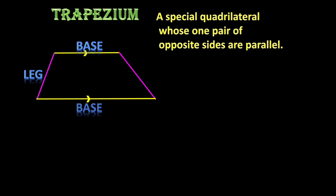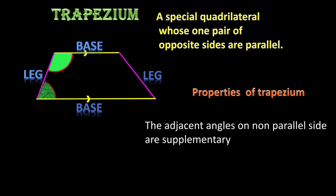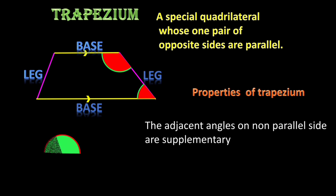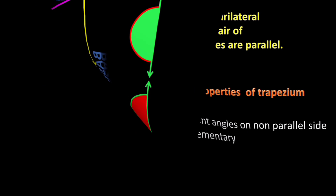Now what are the properties of a trapezium? In a trapezium, the adjacent angles on the non-parallel sides are supplementary. The two angles present on either side of a leg are supplementary.